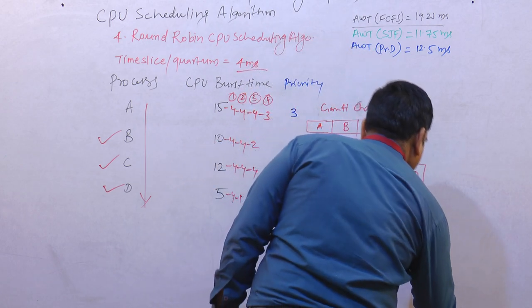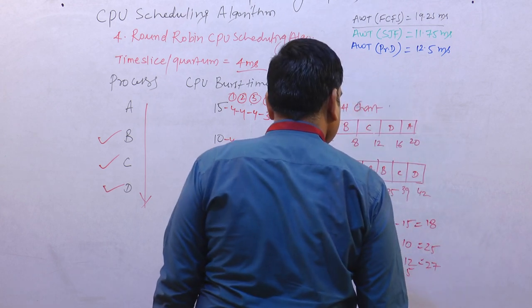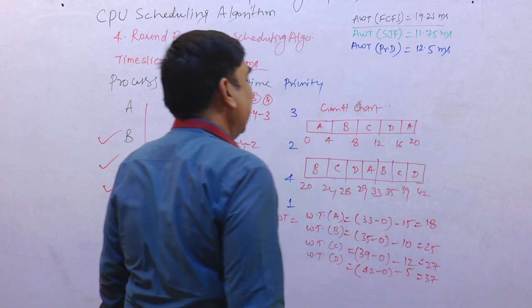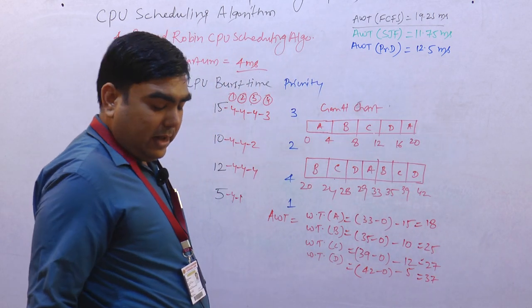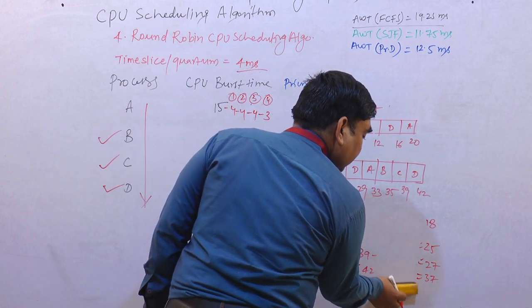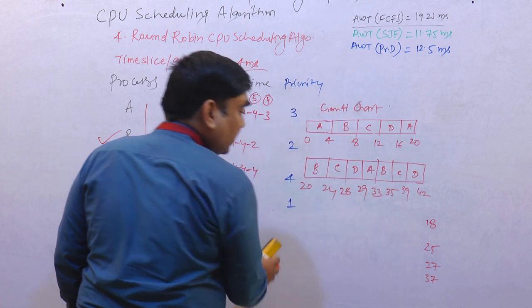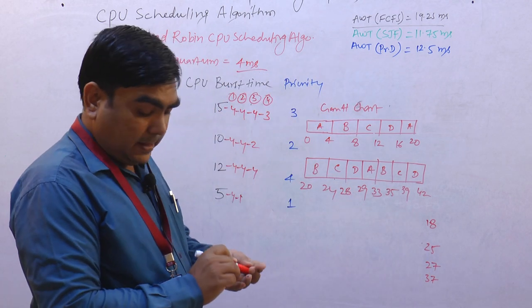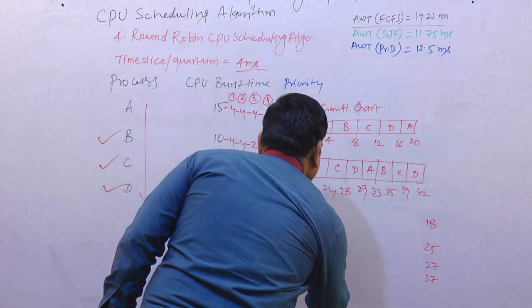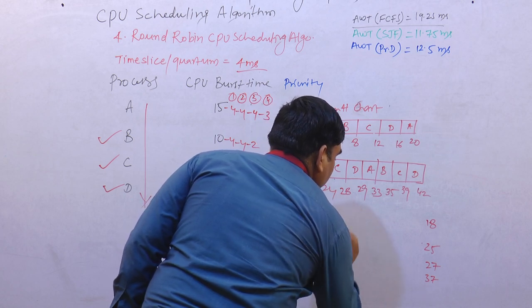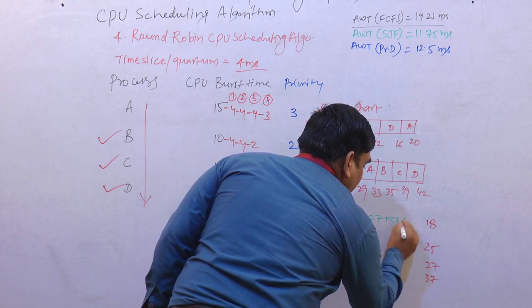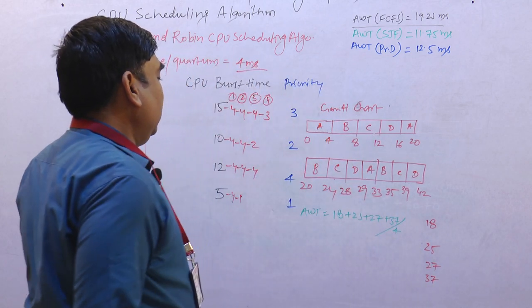Now we can calculate the average of all these values. Average waiting time equals 18 plus 25 plus 27 plus 37 divided by the number of processes, which is 4. So just take the sum of that.